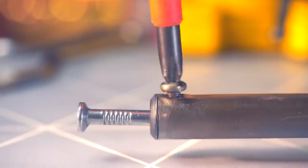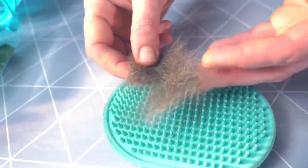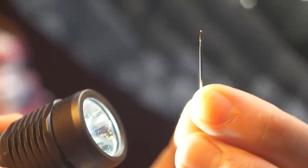Today you will learn why we put a nail in a regular soldering iron, why we collect cat hair, and why we light a flashlight on a sewing needle.